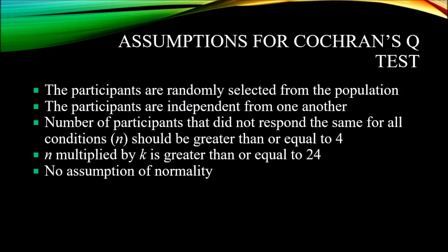When we multiply N by the number of groups K, so N × K, that value needs to be greater than or equal to 24. For example, if you had three groups and only five participants per group who did not respond the same for all conditions, N × K would only be 15, which would not meet this assumption. If you had 10 participants who did not respond the same and three groups, that would be 30, which would meet the assumption. The assumptions for Cochrane's Q-Test are more flexible than for parametric statistics like the one-way repeated measures ANOVA.